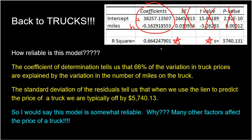What about the standard deviation of the residuals? Here it's $5,740.13. Remember the unit is the same as y, which is price in dollars. The standard deviation of the residuals tells us that when we use the line to predict the price of a truck, we're typically off by about $5,740. The standard deviation of the residuals is more of a general measure — in general, when we use this line to predict the price of a truck, we're going to be off by about $5,700, give or take.